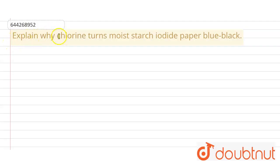In this question, we're asked to explain why chlorine turns moist starch iodide paper blue-black. Here, let's discuss the reaction of chlorine.